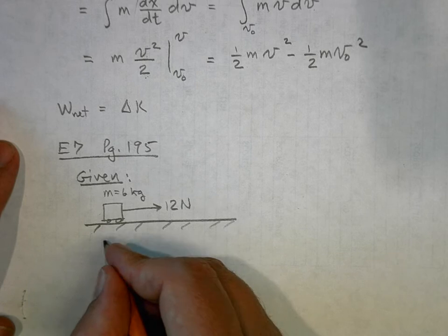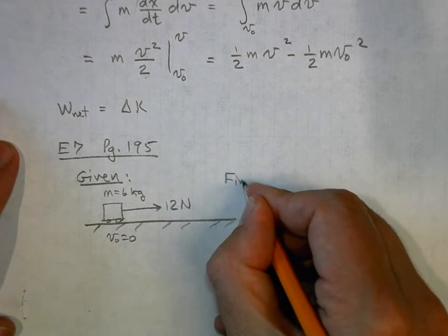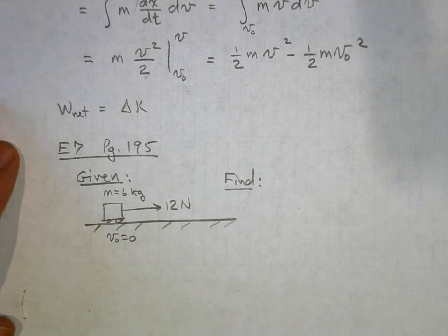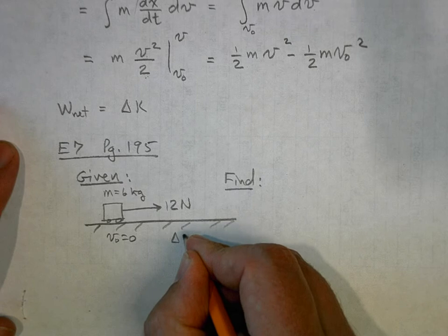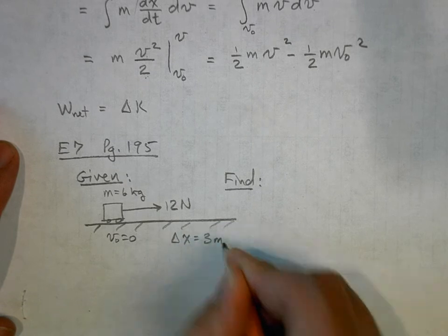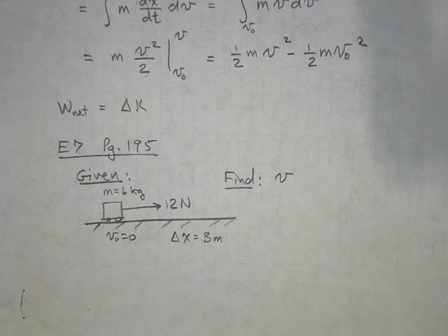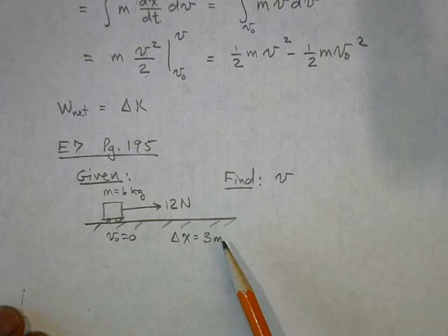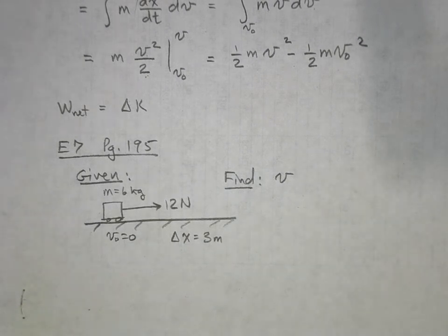And it's at rest, so initial velocity is 0. So we want to find the speed of the block after it is moved 3 meters, so delta x is 3 meters. So I want to find out what the final velocity is. Now please listen to me: when you have a problem that involves force and displacement,